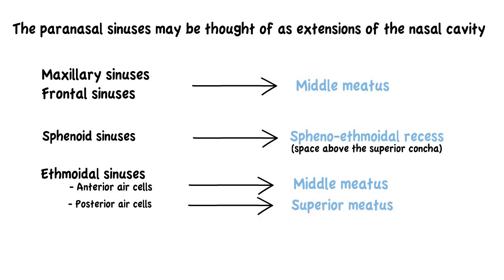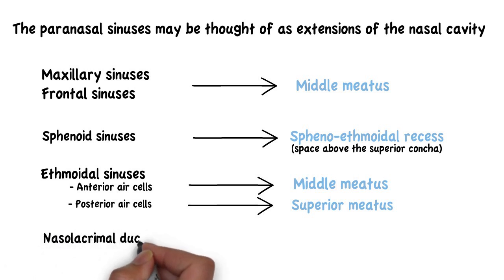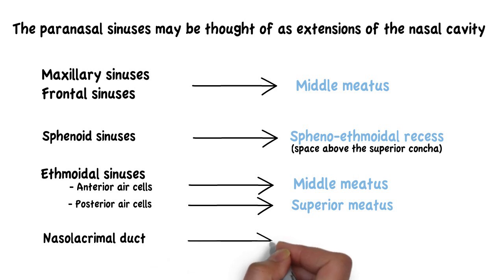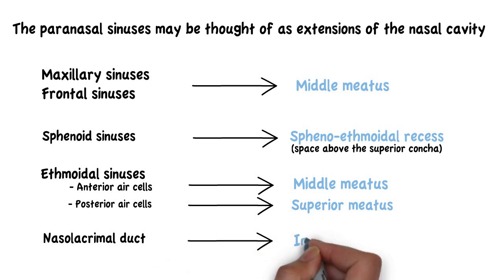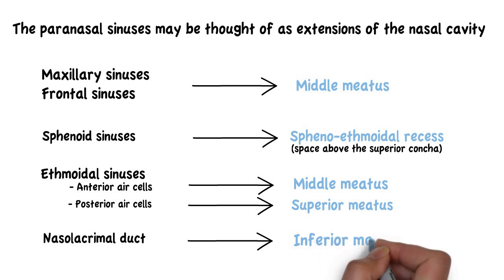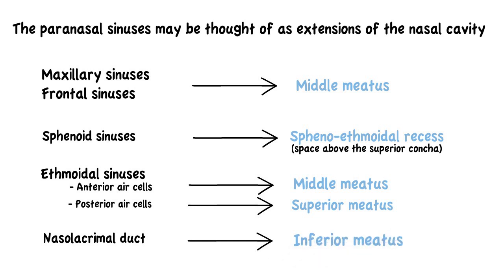One additional duct that drains into the nasal cavity is the nasolacrimal duct. It is an extension of the lacrimal sac that extends into the inferior meatus. That is the reason why when you cry, you may have a runny nose, because the tears drain into your nose.